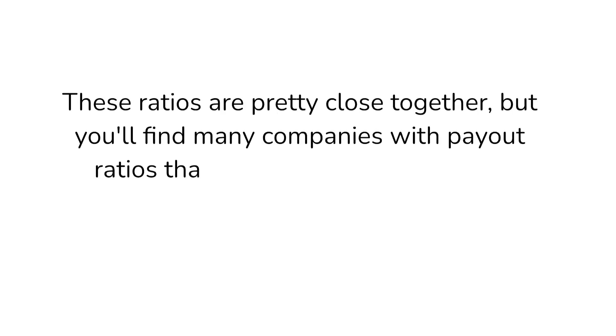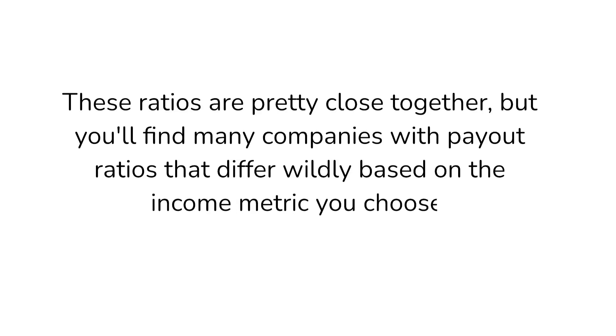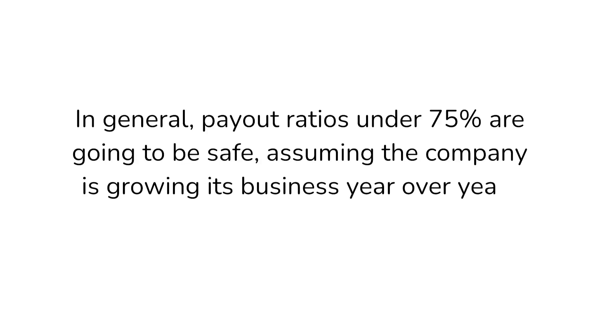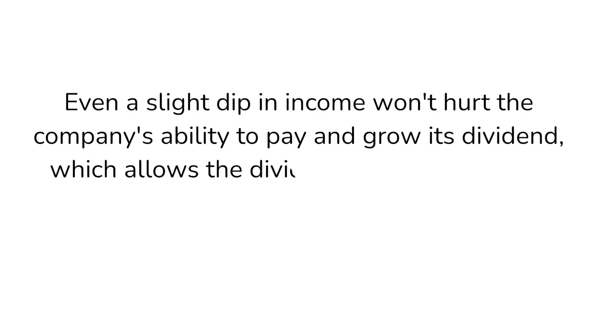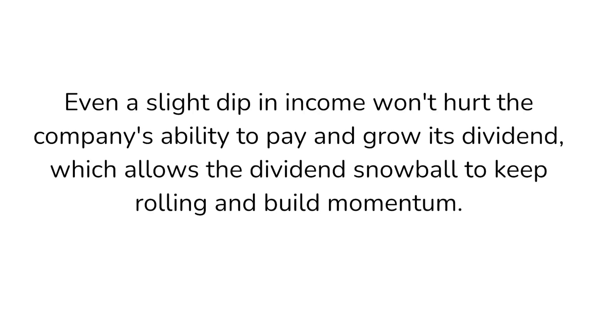These ratios are pretty close together, but you'll find companies with payout ratios that differ wildly based on the income metric you choose. In general, payout ratios under 75% are going to be safe, assuming the company is growing its business year over year. Even a slight dip in income won't hurt the company's ability to pay and grow its dividend, which allows the dividend snowball to keep rolling and build momentum.